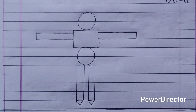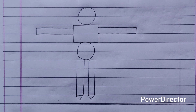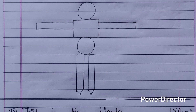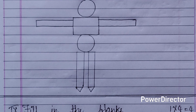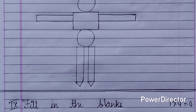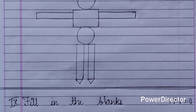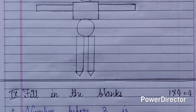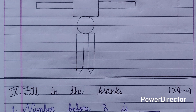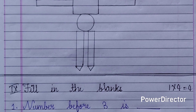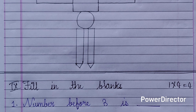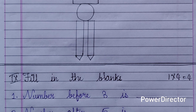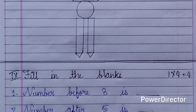Fill in the blanks: four questions are there for four marks, each question carries one mark. Number before three is dash, number after five is dash, number before six is dash, number after seven is dash. All the questions given in the question paper are from the textbook and the classwork.